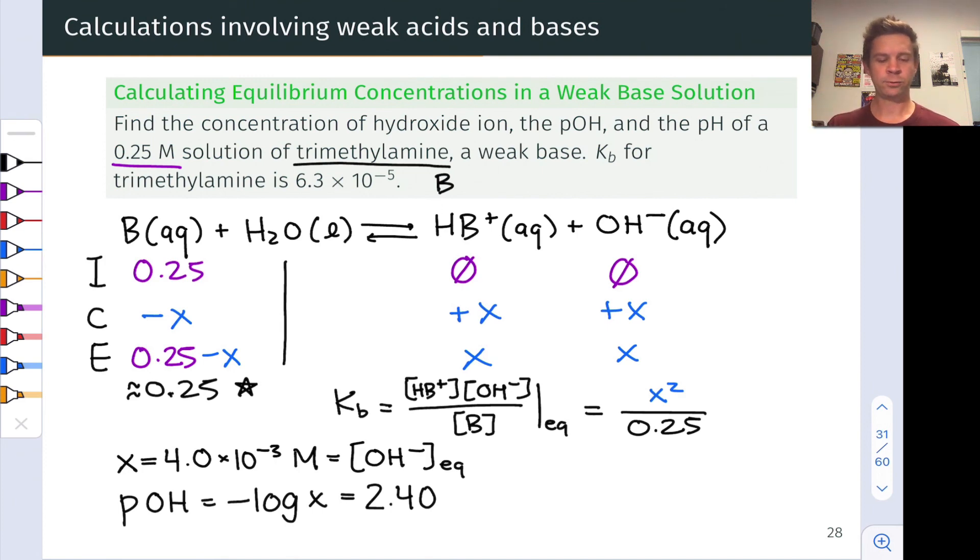To find the pH, we apply the idea that pH plus pOH equals 14, so the pH is 14 minus 2.4, which is 11.6. This pH makes sense for a basic solution being greater than 7, but not so great that the base is strong. This corresponds to a weak base pH given that concentration of 0.25 moles per liter.